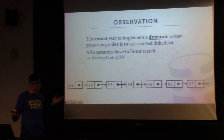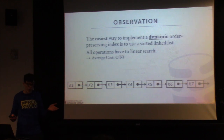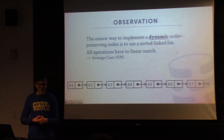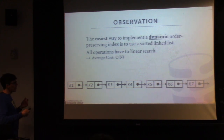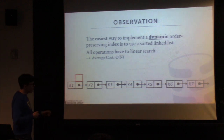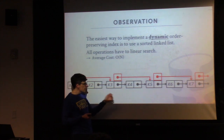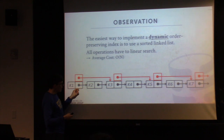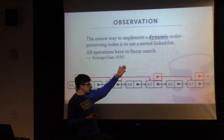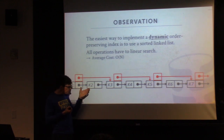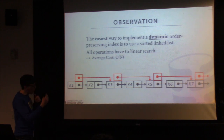This provides the property we want — a dynamic order-preserving index. But is there a simple way to make this better? Instead of having to go across one by one, we could add extra pointers that point to every other element. Say I need to find key six — instead of going one, two, three, four, five, six, I can start at one, recognize the thing I'm looking for is greater than key two, jump to key three, jump to key five, then find key six. That reduces the number of pointer dereferences by roughly half.